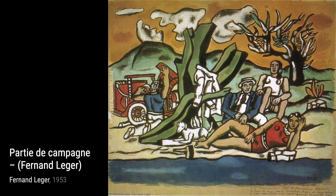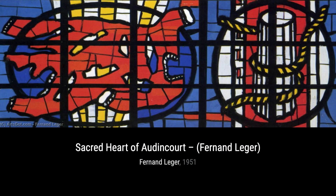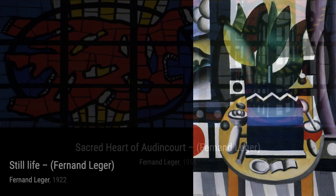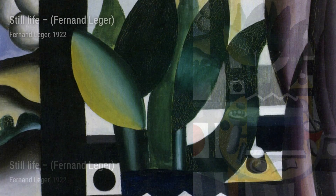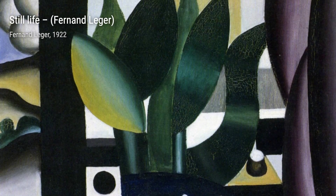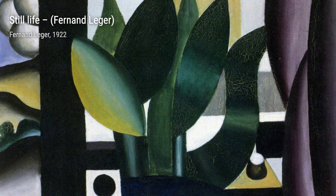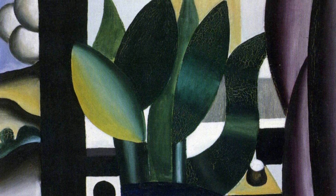Next up, we have Skating Rink, drawing of the curtain of scene. This artwork depicts a lively scene at a skating rink, with Léger's signature bold colors and simplified forms. Now let's talk about Contrast of Form. In this piece, Léger explores the relationship between different shapes and forms, creating a visually striking composition that plays with our perception.